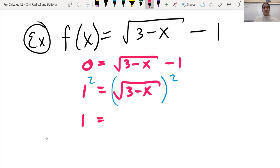So that still just gives me 1 is equal to 3 minus x, because square rooting something that's squared just cancels like this, and this cancels out. And when I work my way through this, I would do 1 minus 3, so I'd get negative 2 equals negative x.